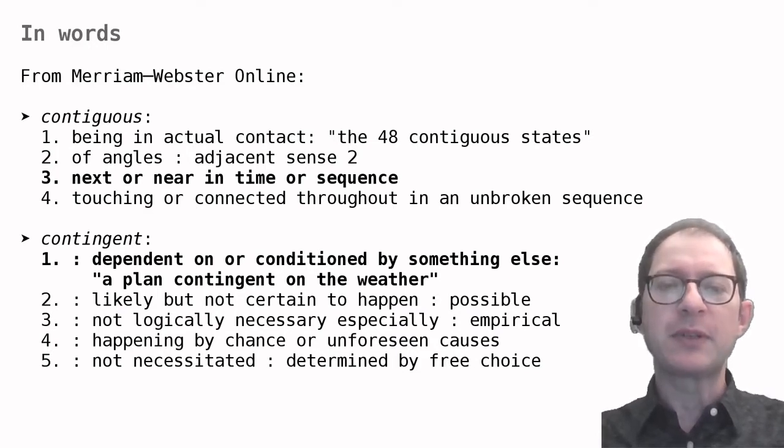The second word, contingent, is a bit trickier. Its meaning in psychology is closest to the first meaning here. We say that the US is contingent upon the CS if there is a correlation between CS occurrence and US occurrence.